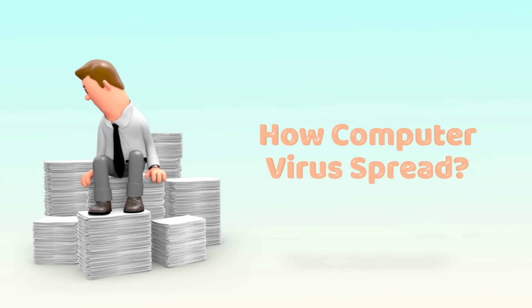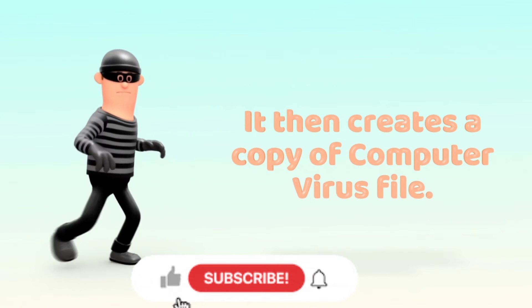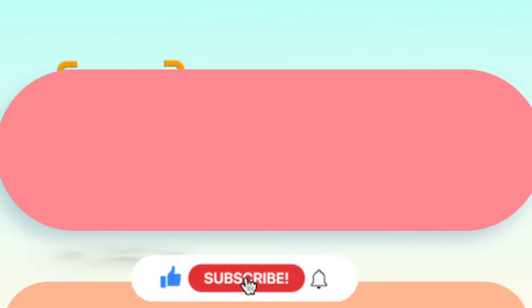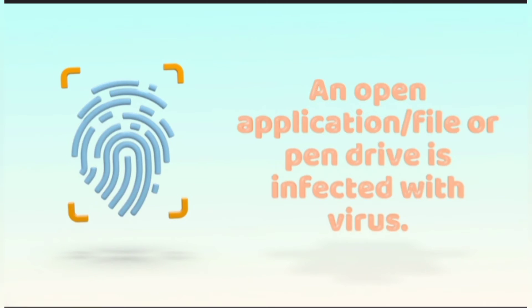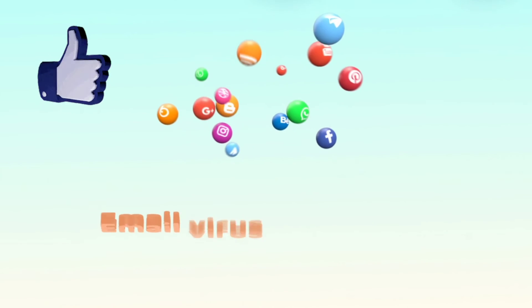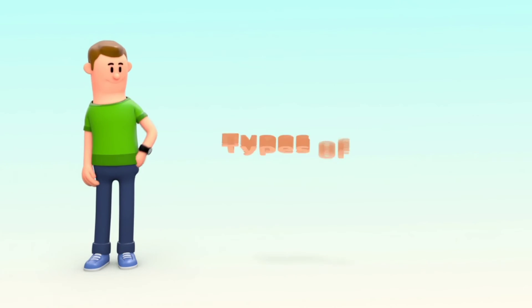Now let's see how a computer virus spreads. When an affected file gets run or opened, the computer virus program makes a copy of itself and resides in memory, and it keeps on replicating itself. It then creates a copy of the virus file, and whenever we open an application or a file or insert an external drive like a pen drive, it attaches this copy to the open file or program and copies onto the disk or drive. That means the open application, file, or pen drive is now infected with the virus. Whenever that pen drive is used on another computer, that computer will also get infected. Email viruses also infect our computer if we click on a link in the email or open an attached file in the mail, so we should always be careful when we click any link in our emails.